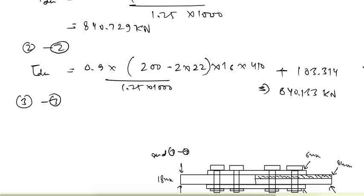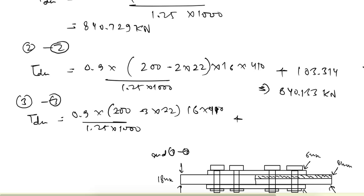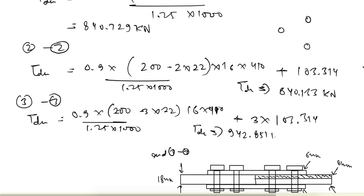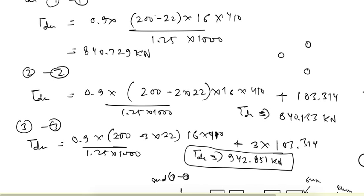For section 3-3, Tdn = 0.9 into (200 − 3 × 22) into 16 into 410 divided by 1.25 into 1000, plus the strength of 3 bolts (1 at section 1-1 and 2 at section 2-2), that is 3 × 103.314 kN. This gives Tdn = 942.851 kN. The critical section is where rupture strength is minimum.